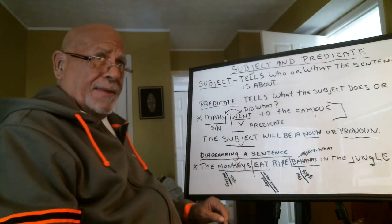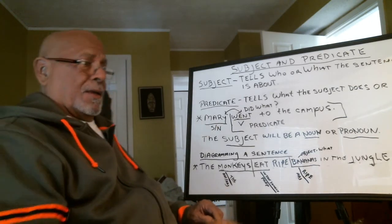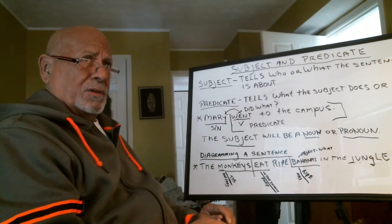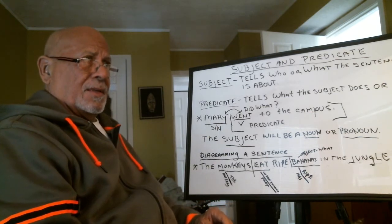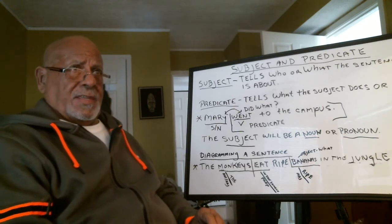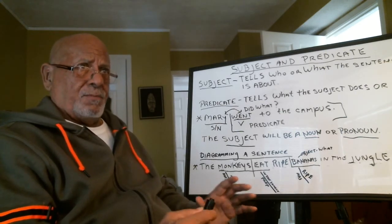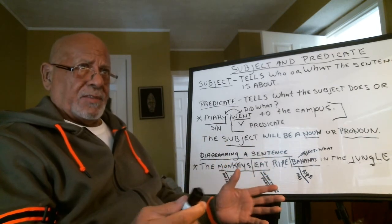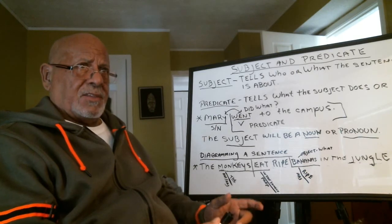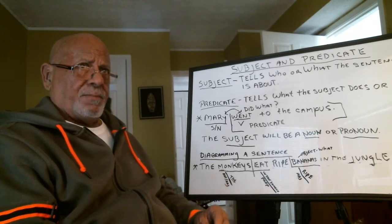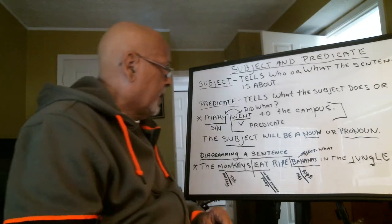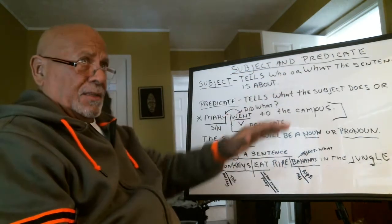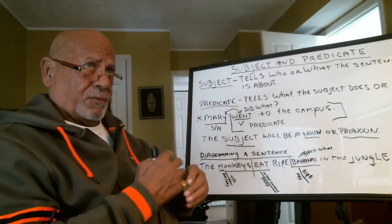Okay, so we're back. Let's look at the structure of a sentence. A sentence is a group of words that conveys a complete thought — not just a whole bunch of words that don't make any sense. A sentence is a group of words that conveys a complete thought. So let's look at the subject and the predicate, the structure of the sentence.